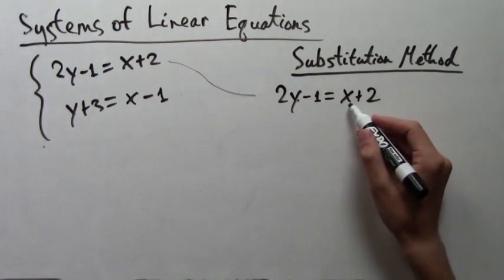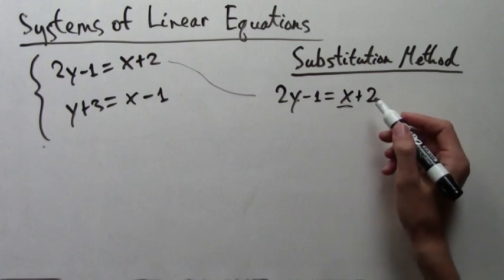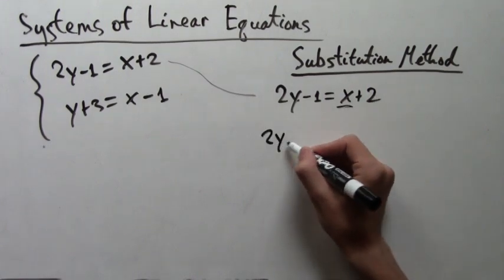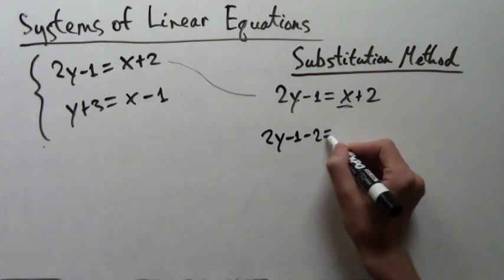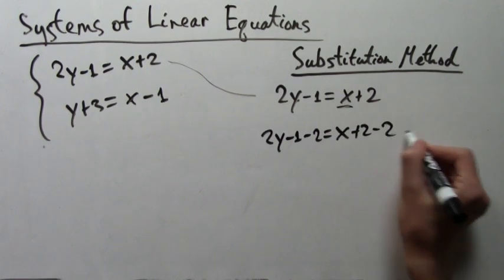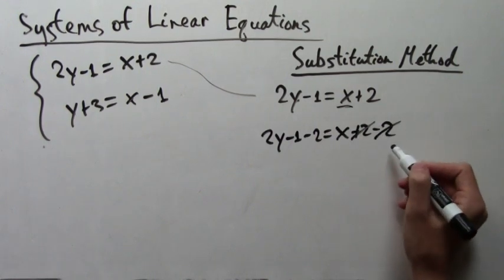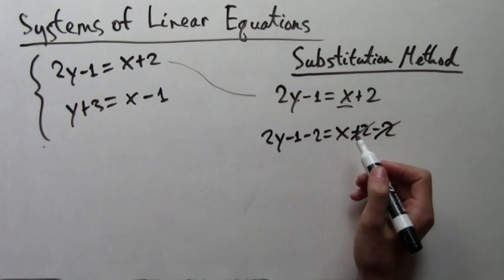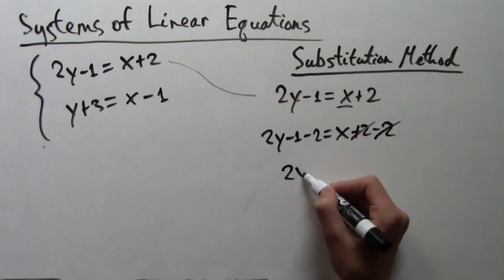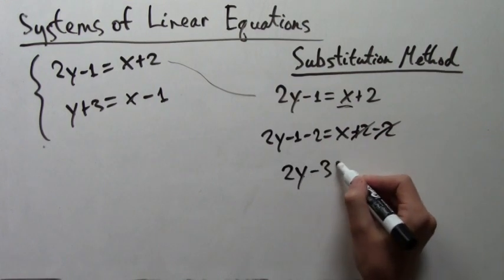So to do that, all we have to do is subtract 2 on both sides. And we'll get 2y minus 1 minus 2 equals x plus 2 minus 2. And this simplifies to just 2y minus 3 equals x.